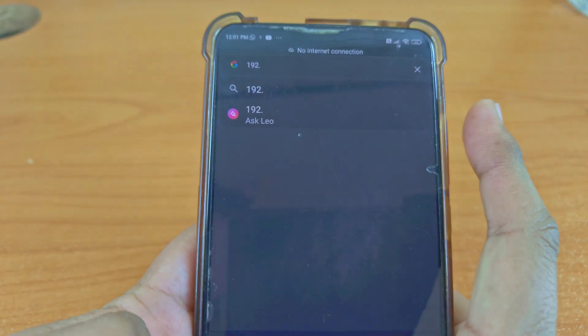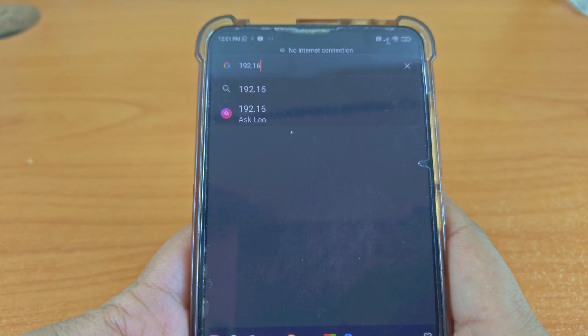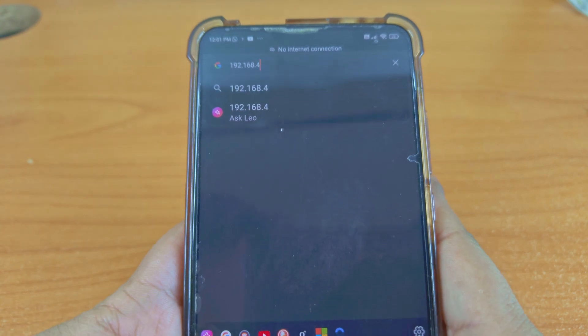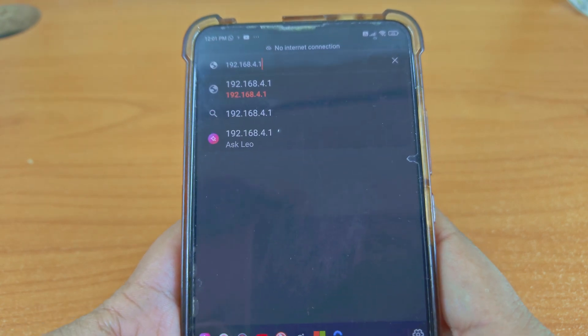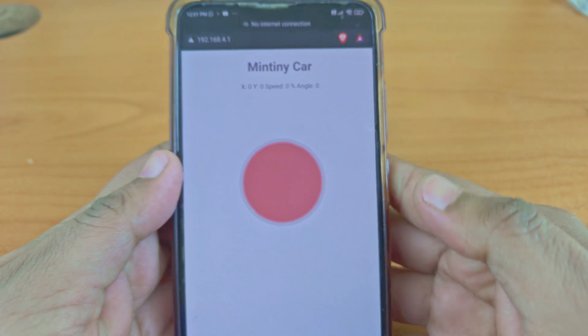Once connected, open a web browser and go to 192.168.4.1. You should get your controller page. That's it.